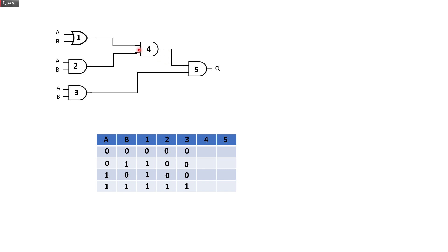For gate 4, its inputs come from gates 1 and 2 — not from A and B directly. It is an AND gate. So: 0 and 0 is 0, 1 and 0 is 0, 1 and 0 is 0, still 0, and 1 and 1 — both are on — so the output will be 1.